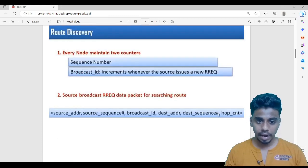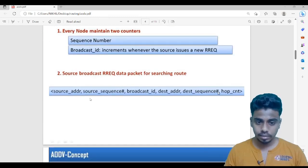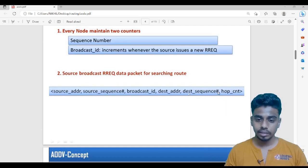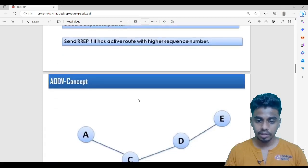We are sending some packet. What all the packet contains is source address, source sequence number, broadcast ID, destination address, destination sequence number and hop count. Initially the source will pass this packet to the neighbor. The neighbor will check this, if nothing it can do, it will increase the hop count and it will pass to the next neighbor. We will understand it with an example.